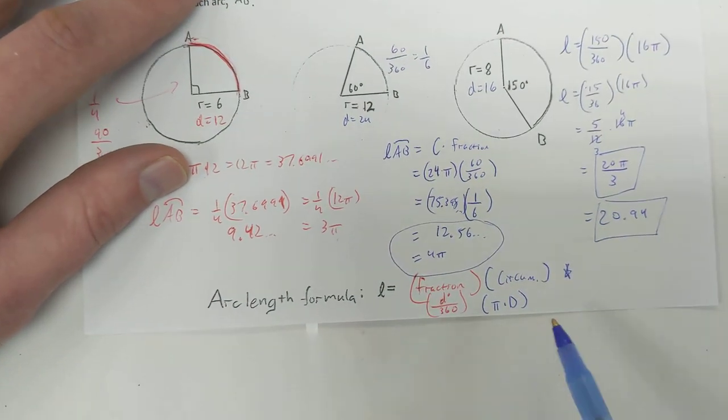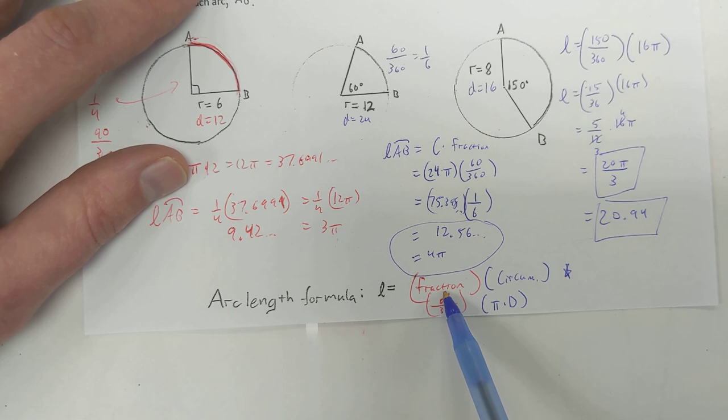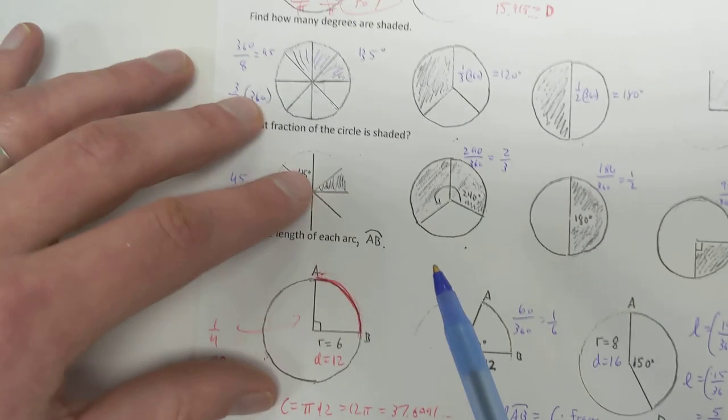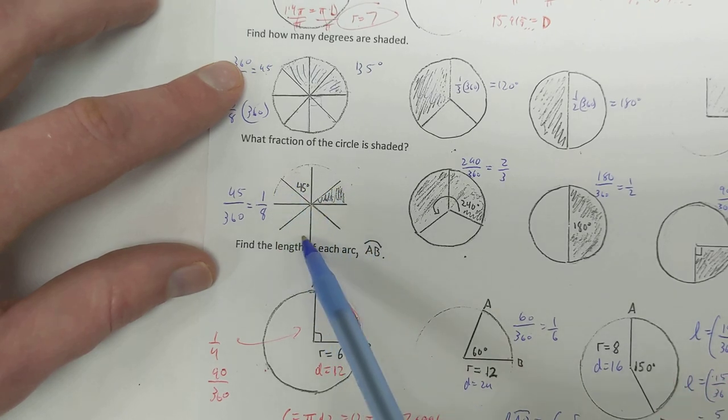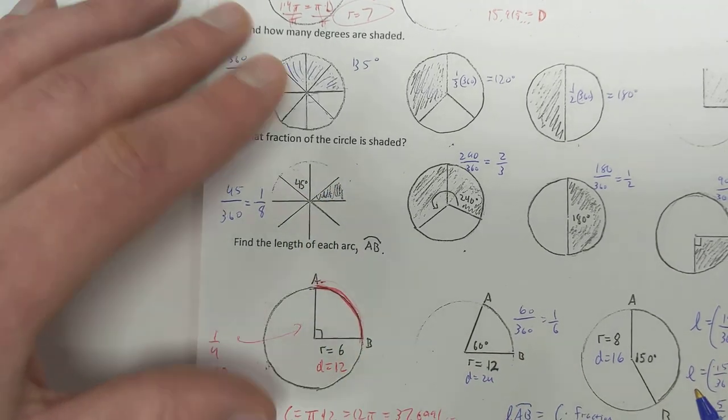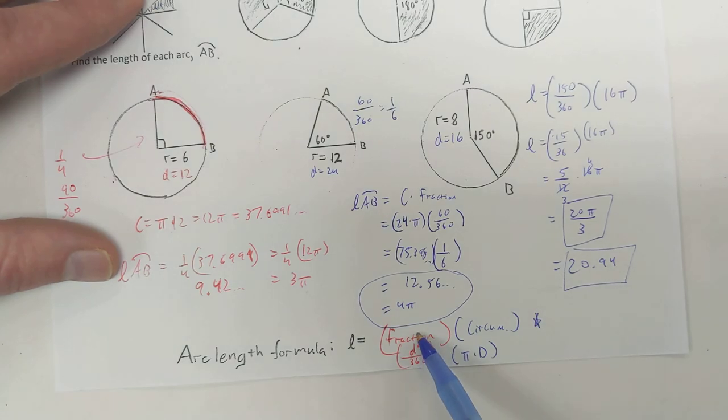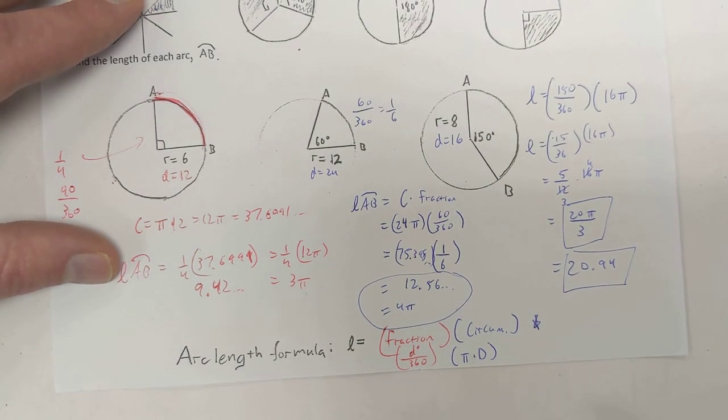So how do we find the length of an arc? You're going to take whatever fraction of the circle it is, and we get that by degrees over 360, or just by looking at the picture, and we'll be like, hey, that's 1 eighth of the whole thing. Okay. So whatever fraction of the circle it is times the circumference. Thanks for watching.